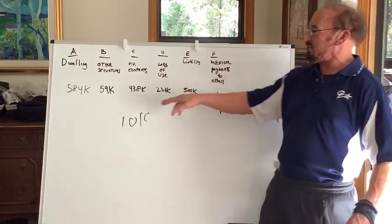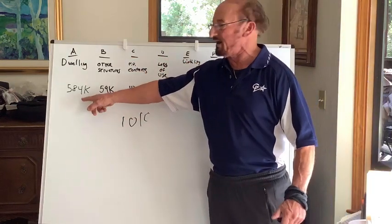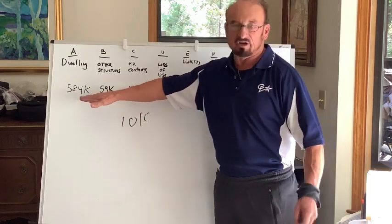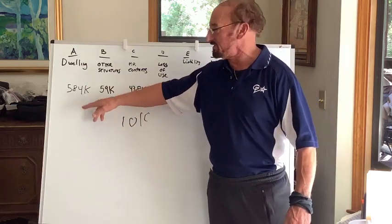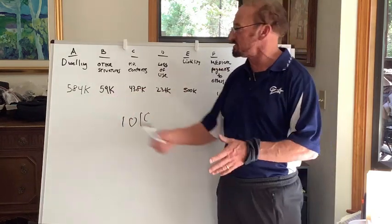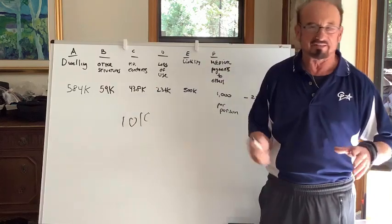A, B, C, D, E, F. Okay, these are the limits you'll see on your policy. $584,000 covers the dwelling. You know, if the house is worth $584,000 or whatever it is, sure, we'll buy that. $59,000 in other structures, that can vary. Usually it's percentage. You can tweak that.